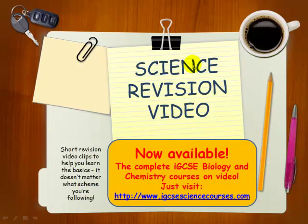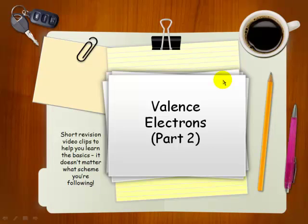Hello and welcome to another Science Revision video. I've called this one Valence Electrons Part 2 because you're probably aware this is part 1. In part 1 we looked at simple electronic structure and how we can work out the number of valence electrons from position in the periodic table. In this video we're going into a bit more detail.